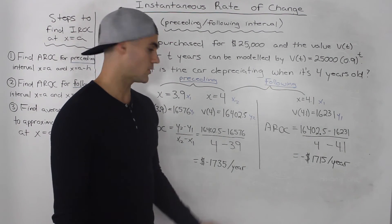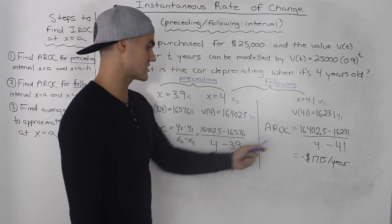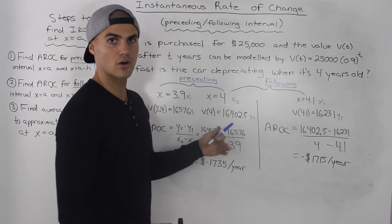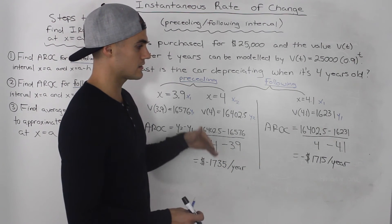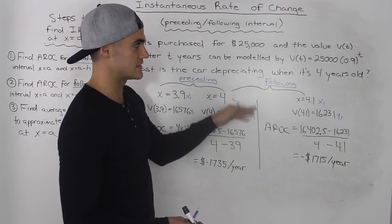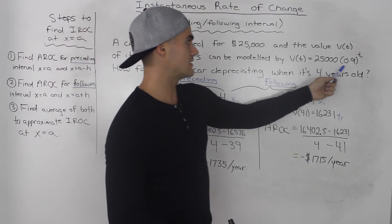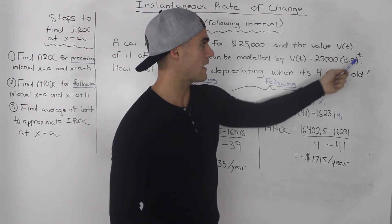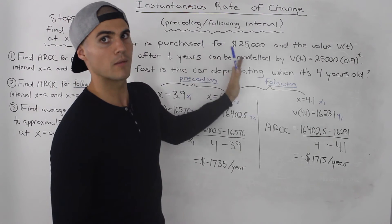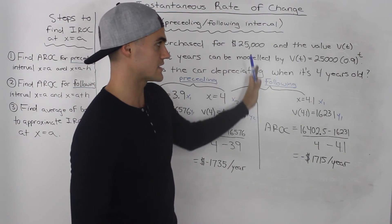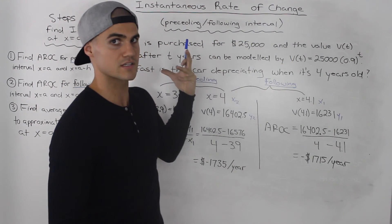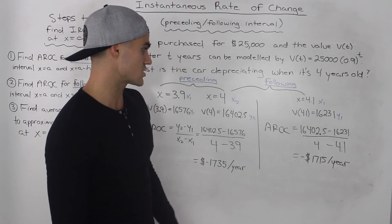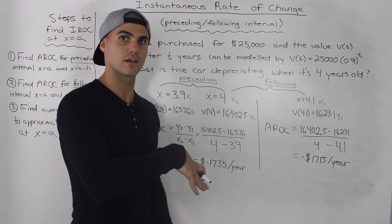One thing to note is that these average rates of change are negative numbers, and that makes sense because the car is depreciating — its value is going down. We can see that in this exponential function because we're taking 0.9 to the power of T, multiplying every value of the car by 0.9 every year. So it's going down to 90% of its previous value each year, which is why the rates of change are negative.